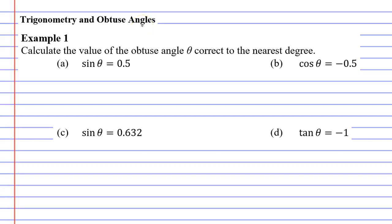In this video we're going to complete example one. It says calculate the value of the obtuse angle theta correct to the nearest degree. As we go through the questions you're going to notice that it's a little trickier than just using your calculator when you work these out.